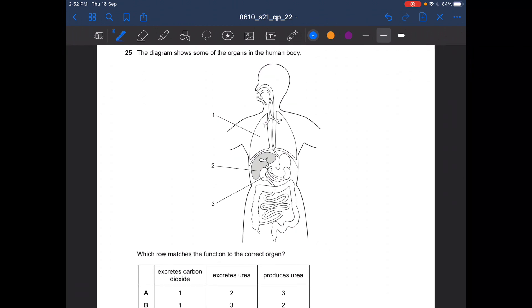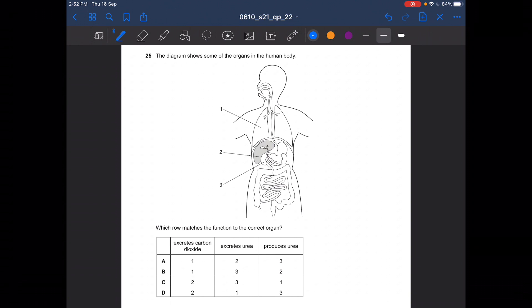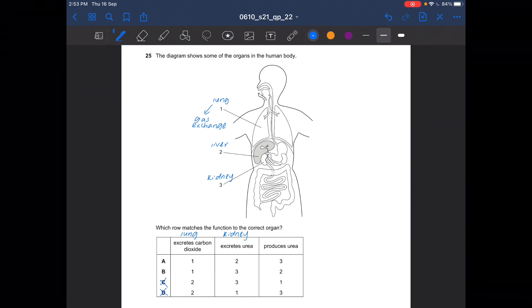Next question. The diagram shows some of the organs in the human body. Which row matches the function to the correct organ? One is your lungs, two is your liver, three is your kidney. Excrete carbon dioxide should be your lung. We excrete carbon dioxide through gas exchange. So can't be C, can't be D. Excrete urea should be your kidney. So the answer should be A. Liver produces urea through deamination, where it removes excess amino acid to urea.